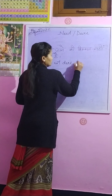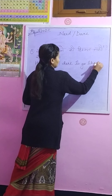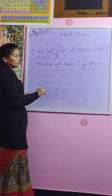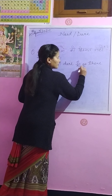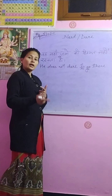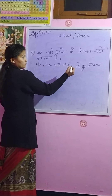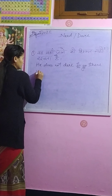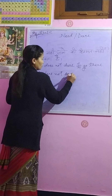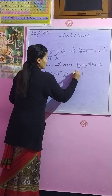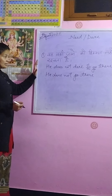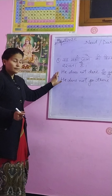For example, when dare is used as a main verb: 'He does not dare to go there.' But when dare is used as a modal: 'He dare not go there.' Here, the word 'to' is avoided. So we have one sentence as a main verb and the same sentence as a modal.